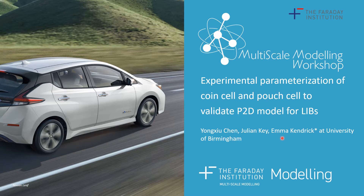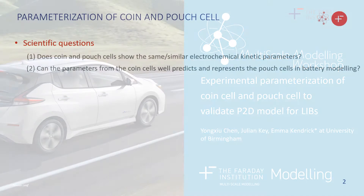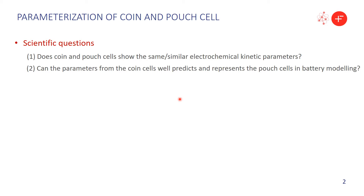The VC here is about the parameterization of coin cell and pouch cell to validate P2D models for lithium-ion battery. In industry, there are different types of cells, like the coin and pouch. So there are the scientific questions: for the same components, does the coin cell and the pouch cell show the same or similar electrochemical parameters?